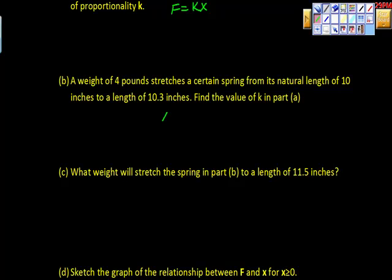So, start off with this. We say that F is equal to k times X. X here takes a little bit of extra work because we end up with a length of 10.3 from an original length of 10. So to find the distance, we're going to take the 10.3 minus the 10. We should get that F is equal to k times 0.3. We also know that the F value is 4, so 4 here. We get that k is equal to 4 divided by 0.3.